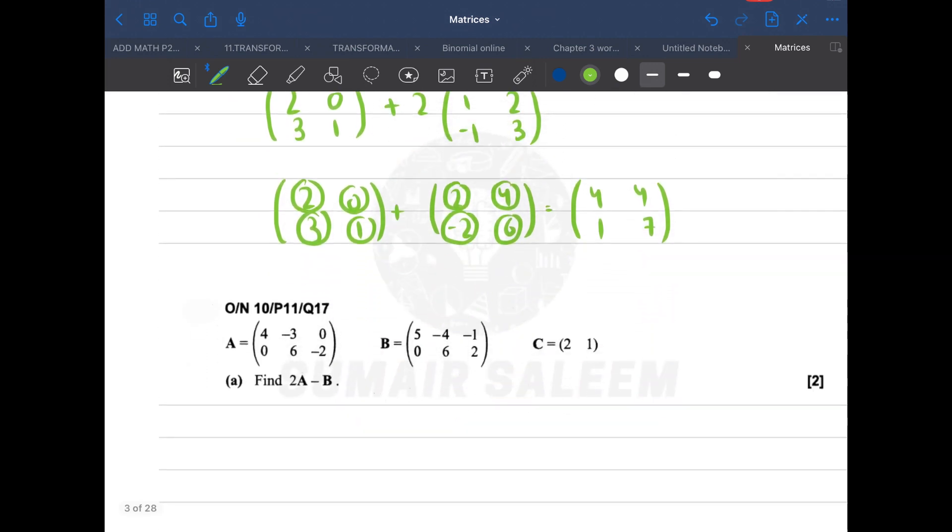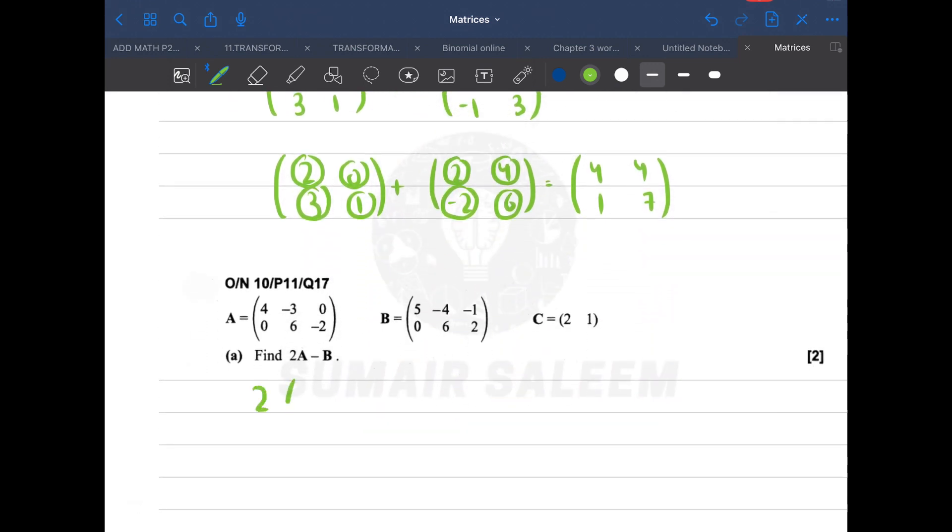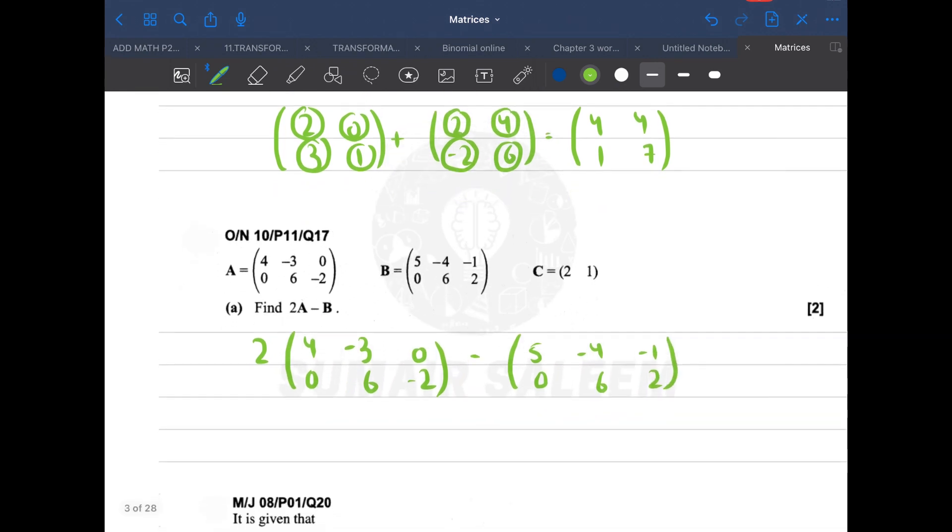Now let's do this question. 2A minus B. 2 into 4, 0, -3, 6, 0, -2, that's my A. Then minus B: 5, 0, -4, 6, -1, 2. Now it's going to become 2 times 4 is 8, scalar multiplication. 2 will be multiplied with every element: 8, 0, -6, 12, 0, -4.